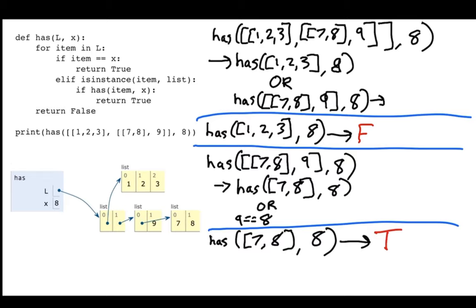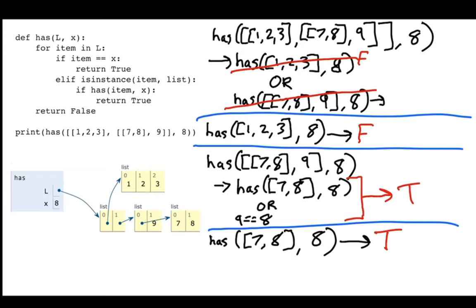So working back up: false OR true gives me true. Back at the original problem, I had `has([1,2,3], 8)` which was false, OR `has([[7,8], 9], 8)` which was true. False OR true is of course true. So the final answer is true — this nested list does somewhere contain the value 8.